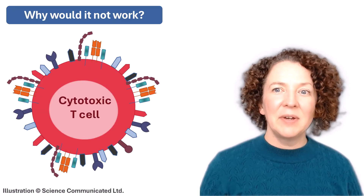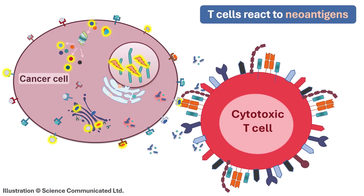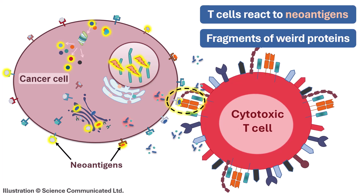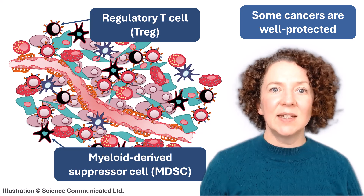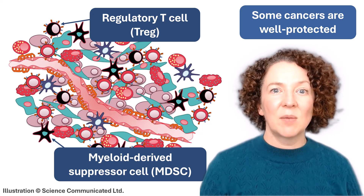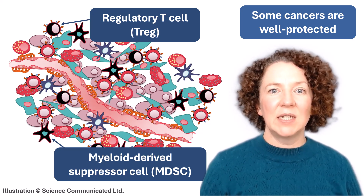You might remember from the video 'How does our immune system spot cancer cells?' that for T cells to kill a cancer cell, they need to recognise it. They do this by detecting small fragments of abnormal proteins called neoantigens, displayed in cup-shaped structures called MHC proteins on the cancer cell surface. But not every cancer produces or displays neoantigens. A T cell might come along, check the cancer cell's MHC cups, find nothing strange and pass on by. Other cancer cells are protected by suppressive white blood cells like regulatory T cells and myeloid-derived suppressor cells, which act as the cancer cell's bodyguards holding back the cancer-fighting T cells.